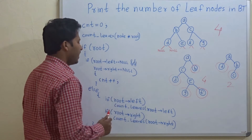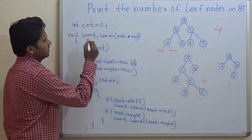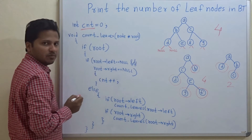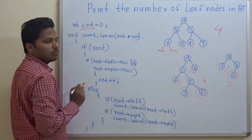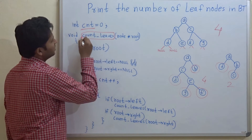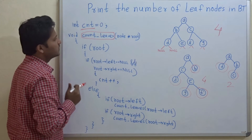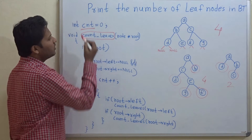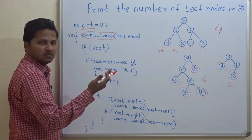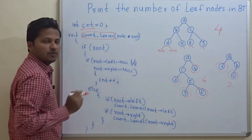Now let's look at the program to count the number of leaf nodes. cnt is a global variable to count the number of leaf nodes. The function we are using is count_leaves. This is a recursive function, which is why we have declared this global variable, so that even in recursion it keeps on counting the number of leaf nodes.